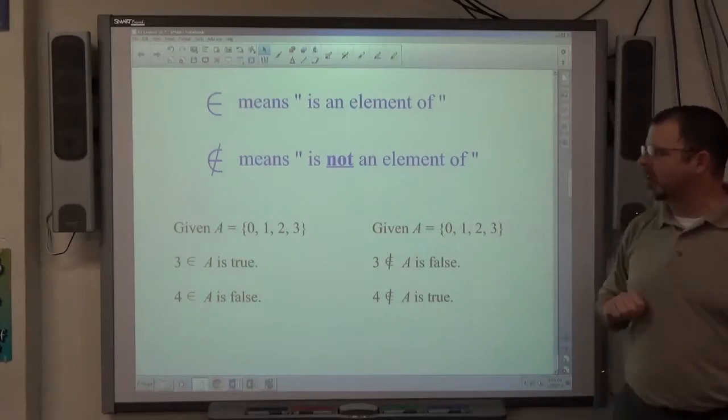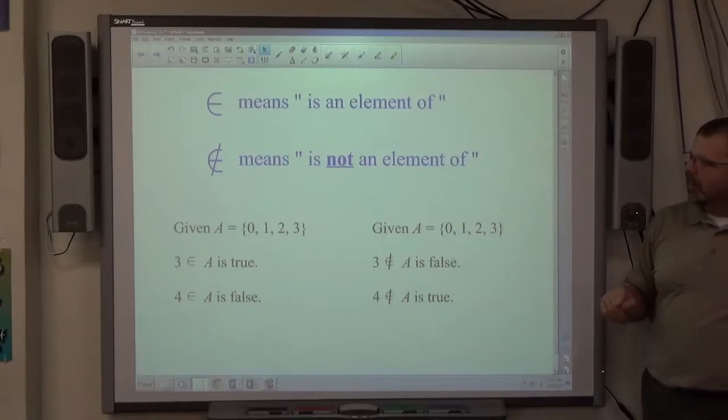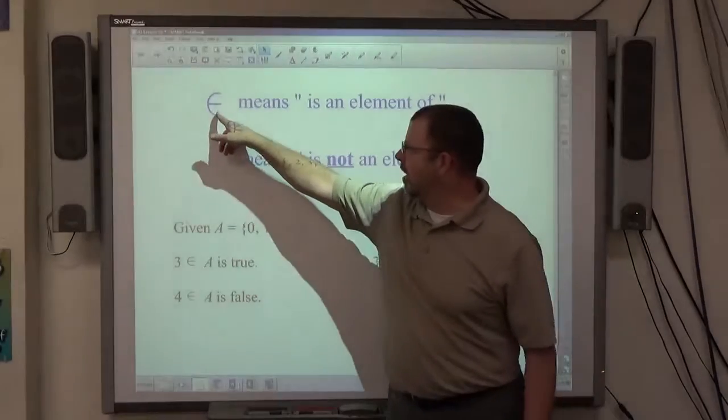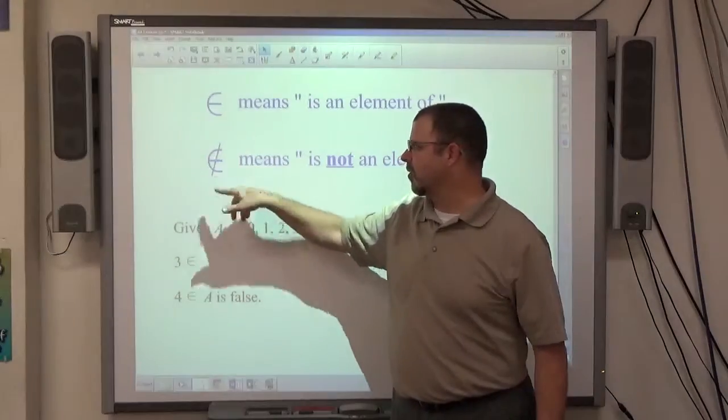Okay, Example 2. Before we go to Example 2, let's take a look at the yellow sheet I gave to you. We have these symbols, so it looks like kind of a curvy E and then a curvy E with a slash through it.